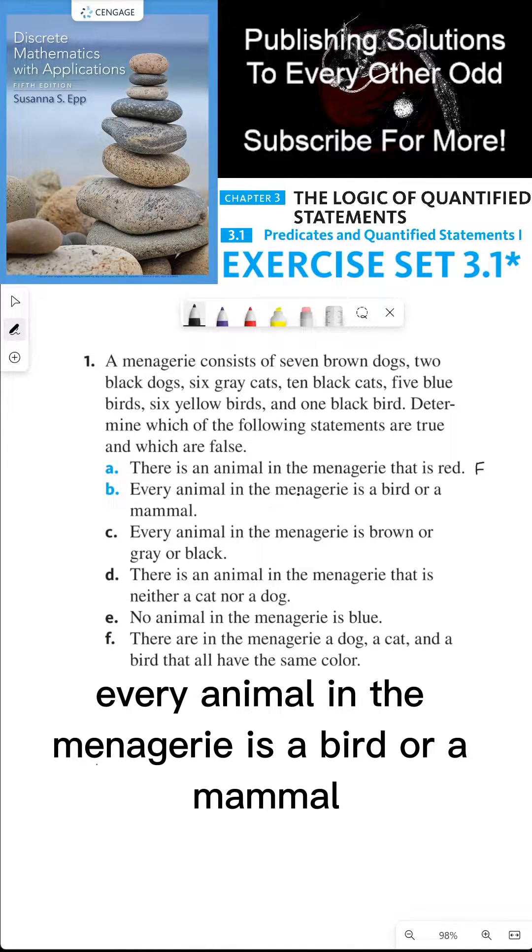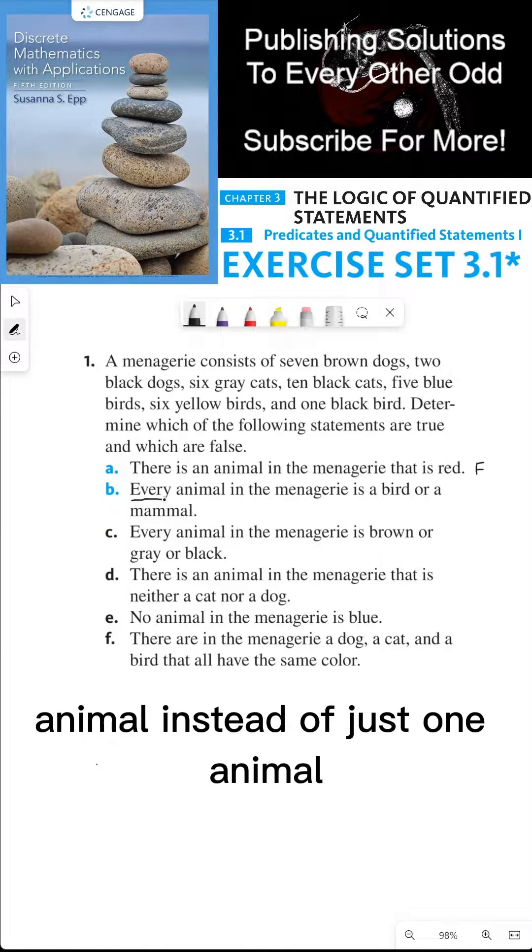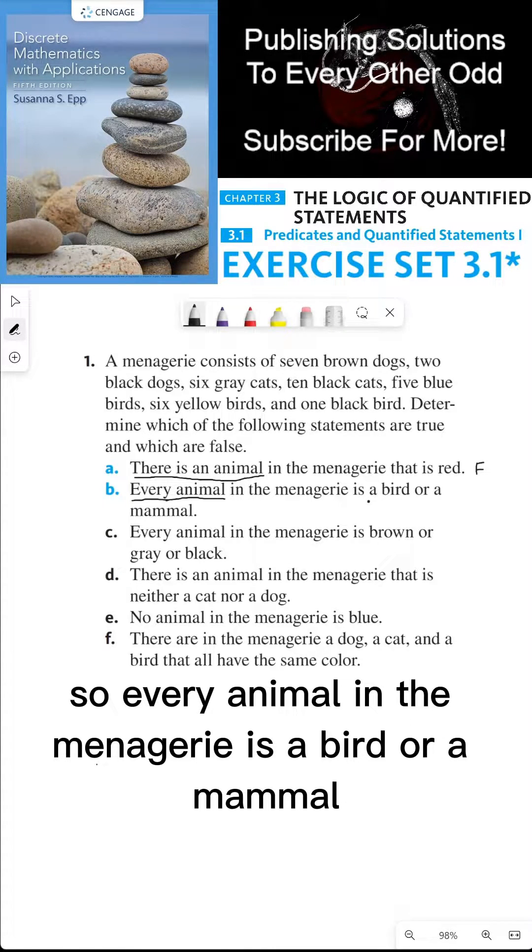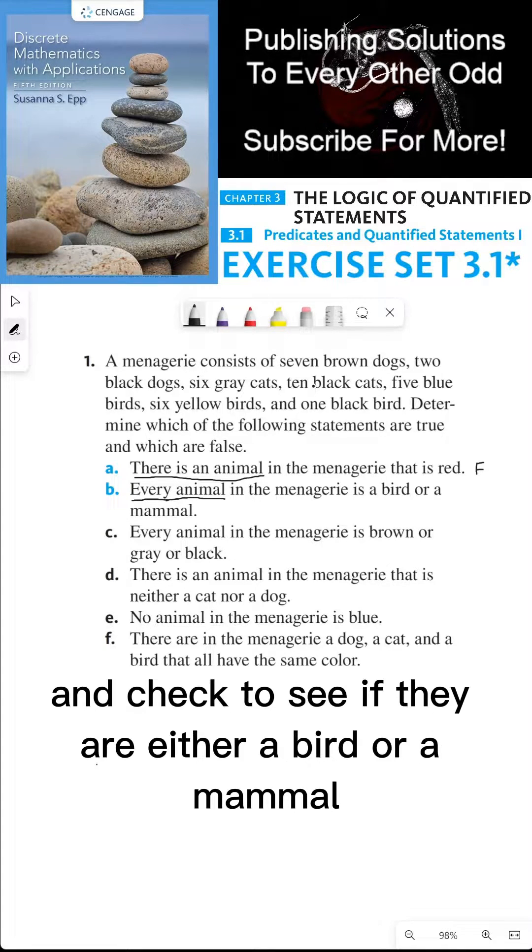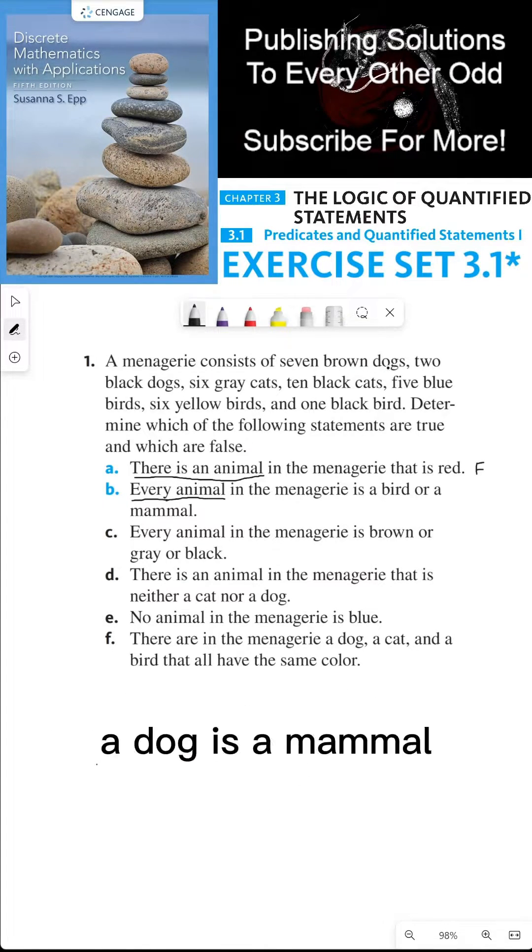Part B. Every animal in the menagerie is a bird or a mammal. Notice here that we're making a claim about every animal instead of just one animal. So let's go through each animal and check to see if they are either a bird or a mammal. Starting with the seven brown dogs, a dog is a mammal.